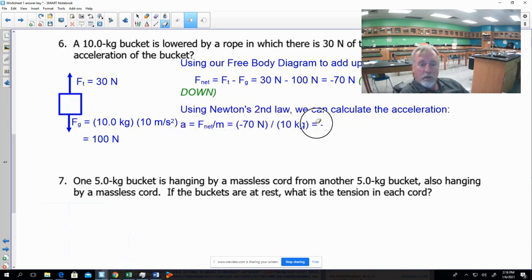What's our F net? Negative 70 Newtons divided by our 10 kilograms. That's going to give us negative 7 meters per second squared.